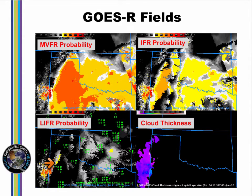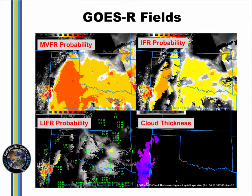Cloud thickness is a GOES-R product that estimates the vertical thickness, cloud base to cloud top, of the lowest water-based cloud layer. This product is essentially a lookup table that compares 3.9 micron emissivity to sodar observations of cloud thickness off the west coast of the U.S. GOES-R cloud thickness is not computed in regions of multiple cloud layers because satellite information on the lowest layer is missing in such cases. GOES-R cloud thickness is also not computed during twilight conditions because of rapid changes in the reflected component of 3.9 micron radiation.